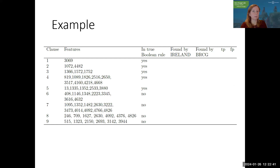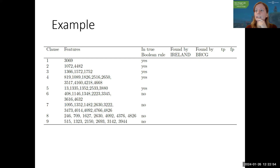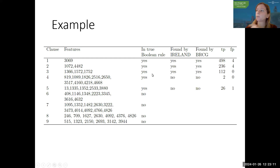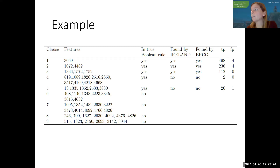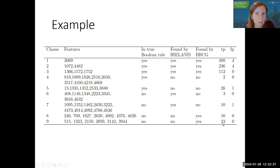Looking more closely at the output for one synthetic data set where we know the underlying truth: the true Boolean rule has five AND clauses. Both IRELAND and BRCG find the first three shorter AND clauses, which have sufficient evidence in the data — sufficient true positives and very few false positives. Then both found other AND clauses to classify the remaining cases, and this is where the difference in performance comes in.